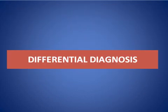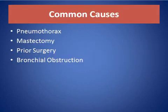The differential diagnosis of unilateral hyperlucent hemithorax includes the common causes: pneumothorax, mastectomy, prior surgery, and bronchial obstruction.